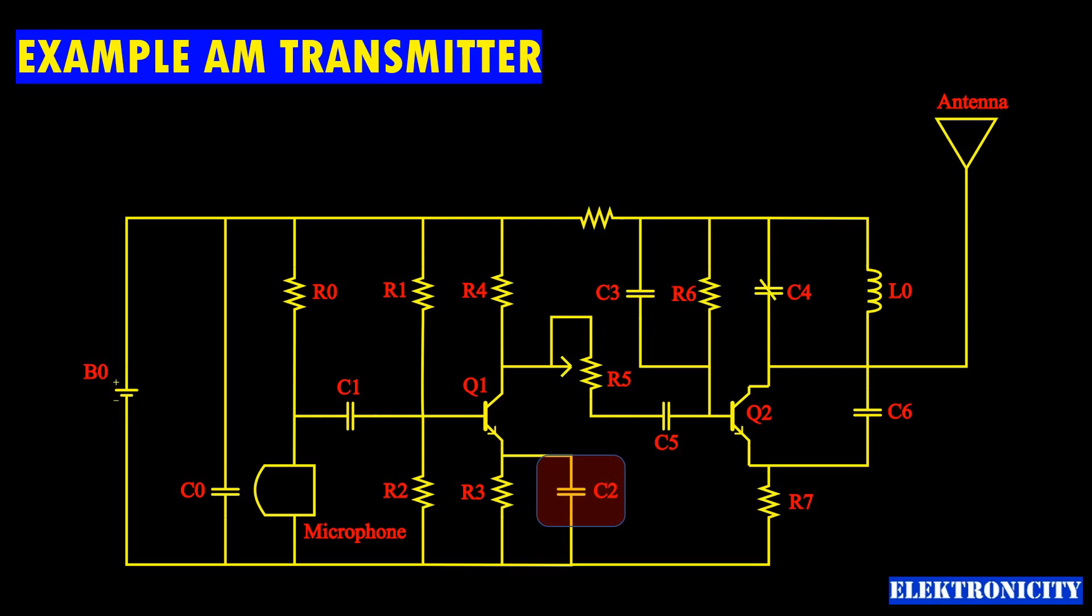The microphone can be a condenser microphone and the amount of AM modulation can be adjusted by the variable resistance R5. For further details about this circuit, we refer viewers to the references in the description of this video.